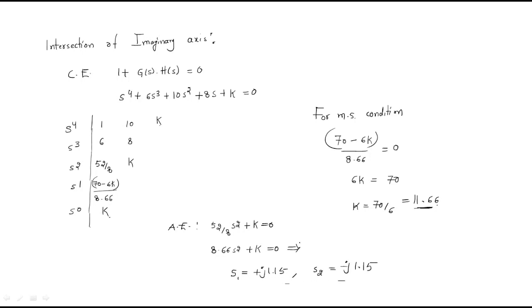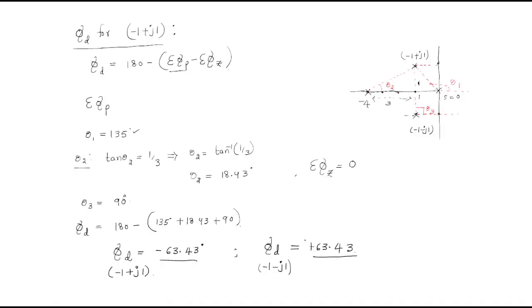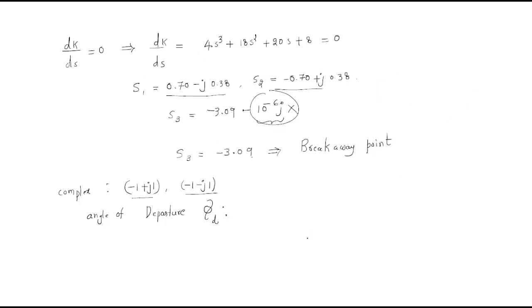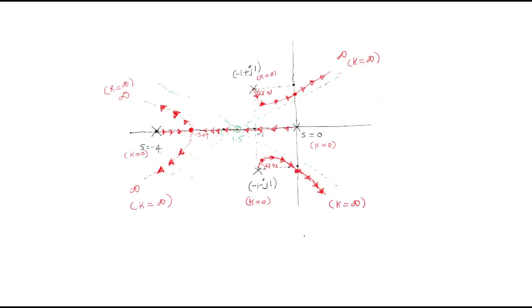These two values, plus j1.15 and minus j1.15, are the intersection points of the root locus with the imaginary axis, which we mark on the diagram.